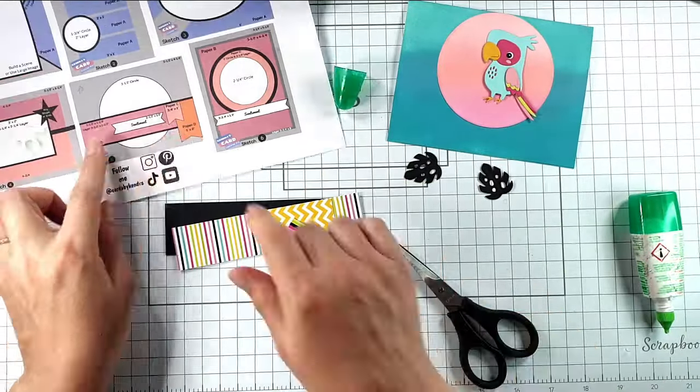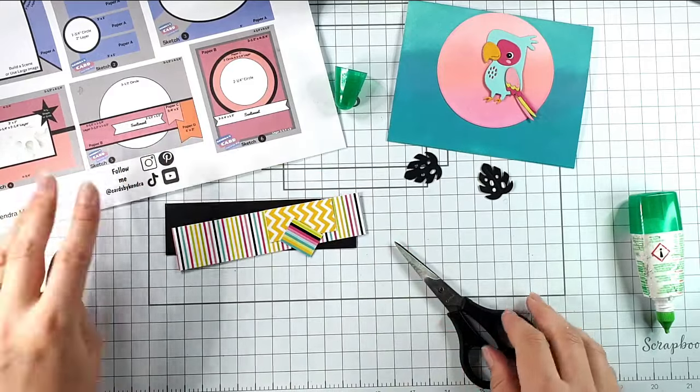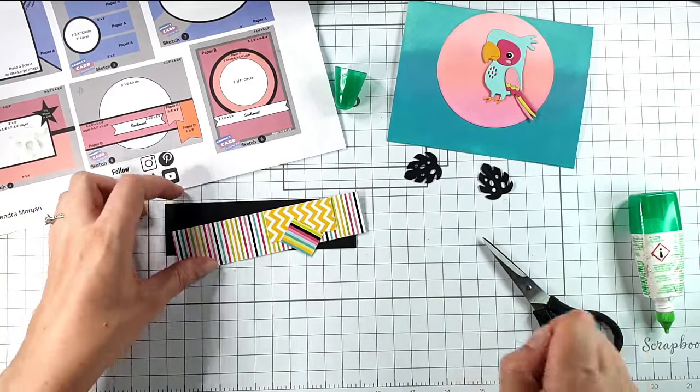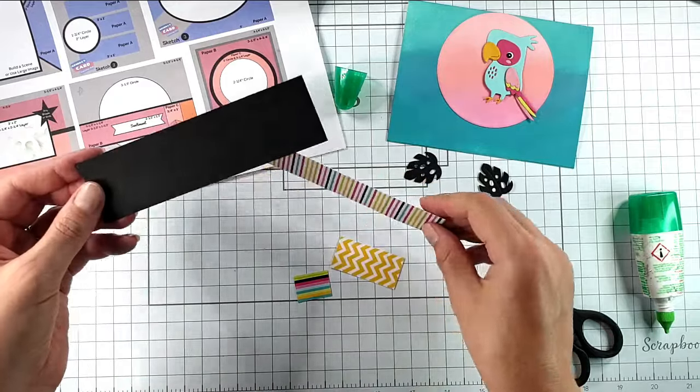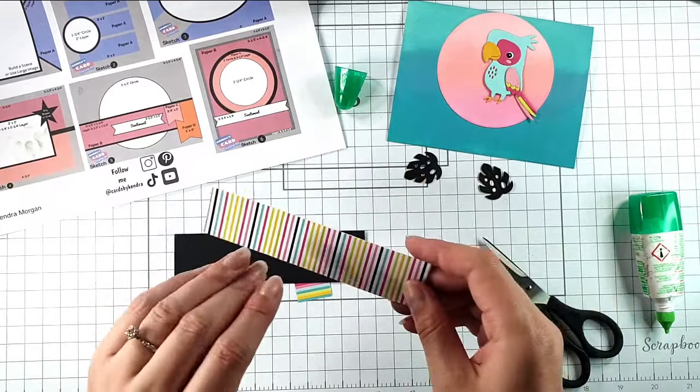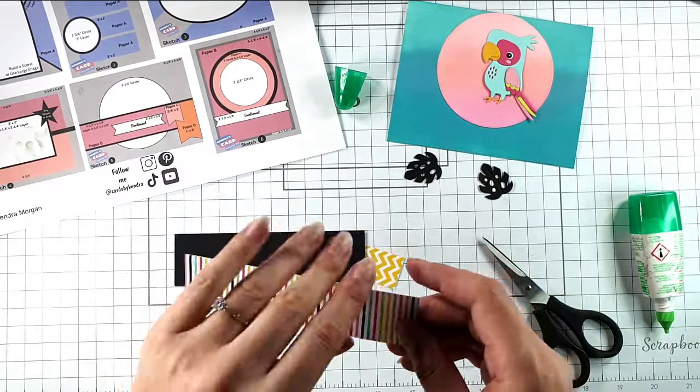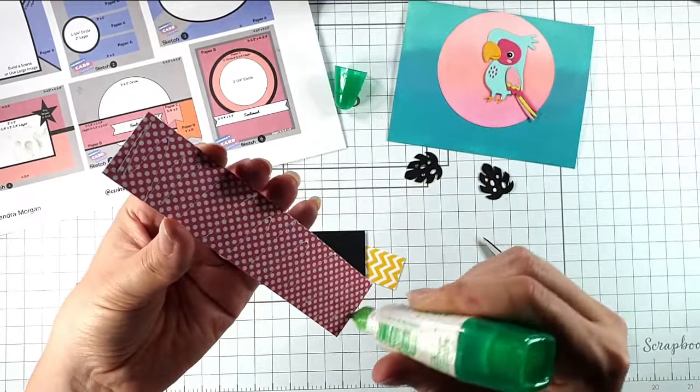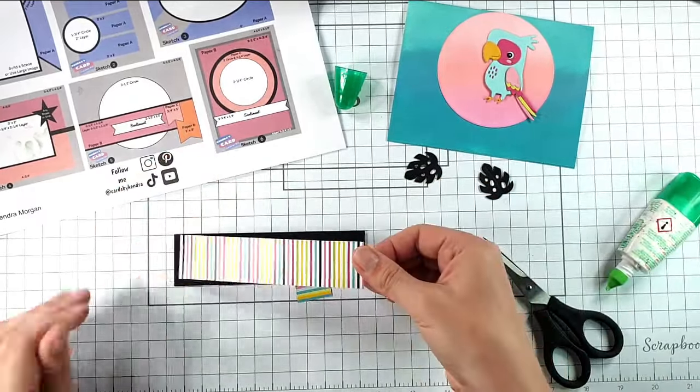So then let's create these panels here. So we've got a five and a half by one and a half inch layer. So that's this black layer. We've got a five and a half by one and a quarter inch strip of patterned paper. So that's from that pack I showed you earlier. I'm going to glue those together.